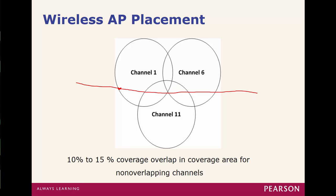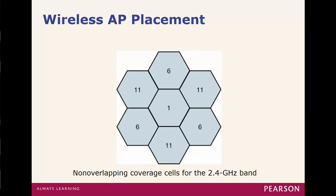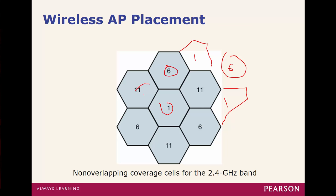If we need to add a fourth access point, it might use channel 1. You'll never see channels overlapping improperly — one AP will be channel 1, another channel 1, the adjacent one channel 6. You always keep the numbers separated: use 1, 6, and 11, and just keep repeating those numbers.